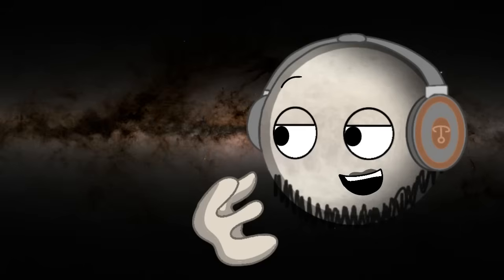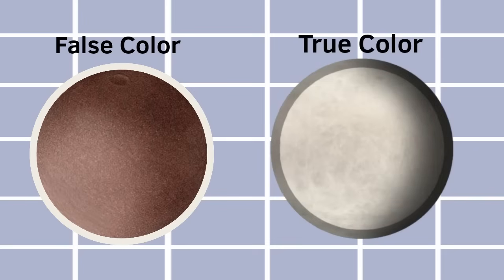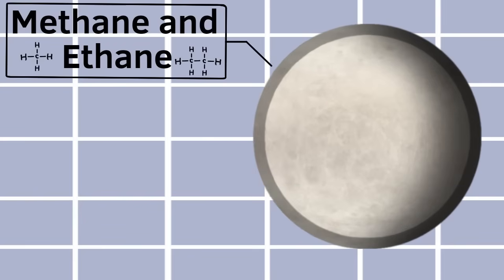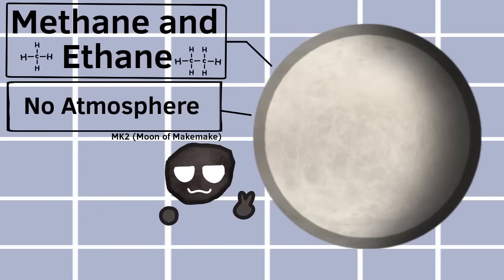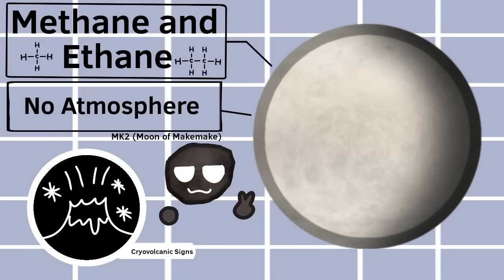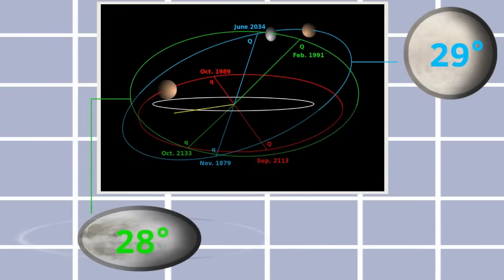Okay, my turn. I'm Makemake, named after the Rapa Nui god of fertility, and nicknamed the Easter Bunny, due to my discovery day being very close to Easter. A lot of people knew me as a reddish-brown color, but in reality, I'm actually a very bright color, a creamy white. It's mainly due to my icy surface, composed of methane and ethane. I don't have an atmosphere, but I do have one small dark moon, discovered a decade after my discovery due to how bright I was. Like Pluto, I also have cryovolcanoes, and along with Haumea, we have an orbit at around 28 and 29 degrees.